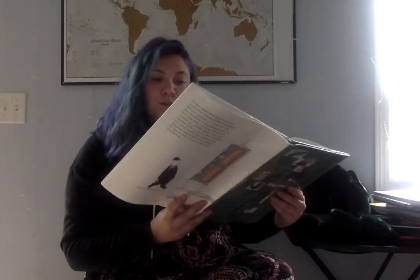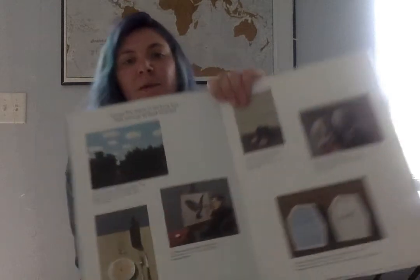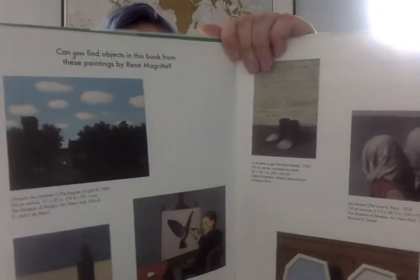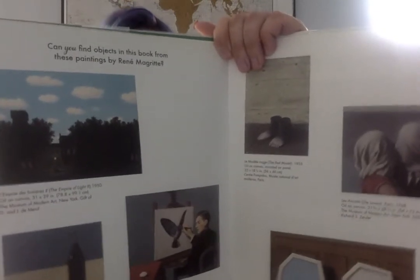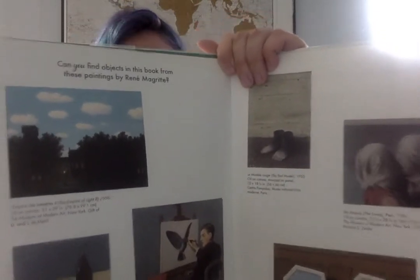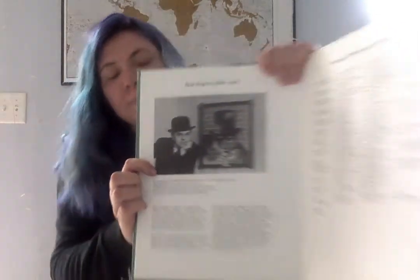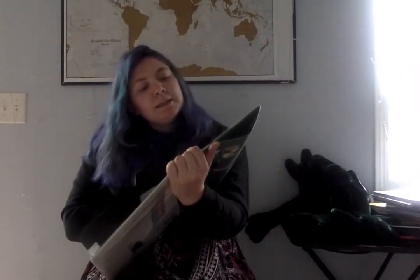So these are actually paintings that Rene Magritte made. How cool are they? Take a moment to look at them, see what you can find. How amazing and fun is that book? So in this book we learned a lot about Rene Magritte. This is a portrait of him, and he lived from 1898 to 1967.